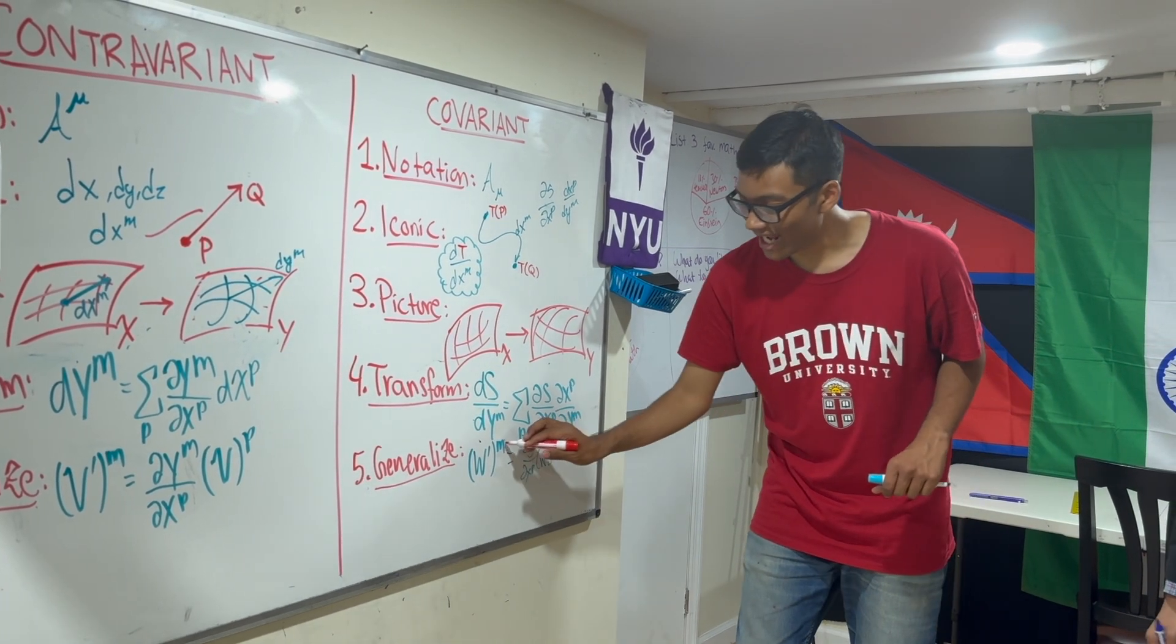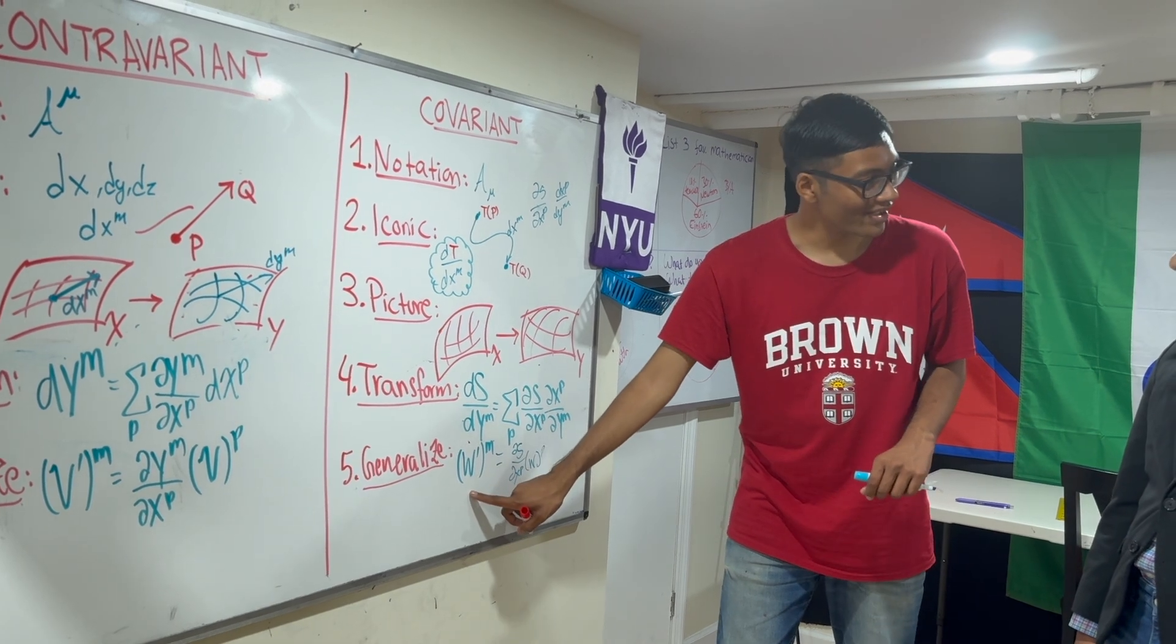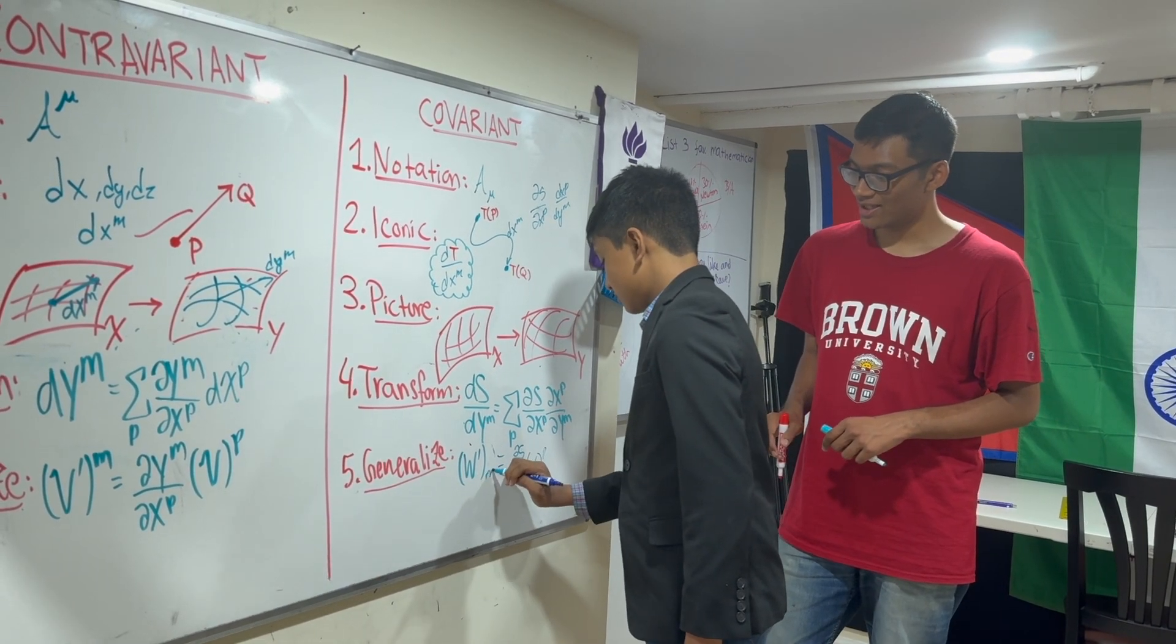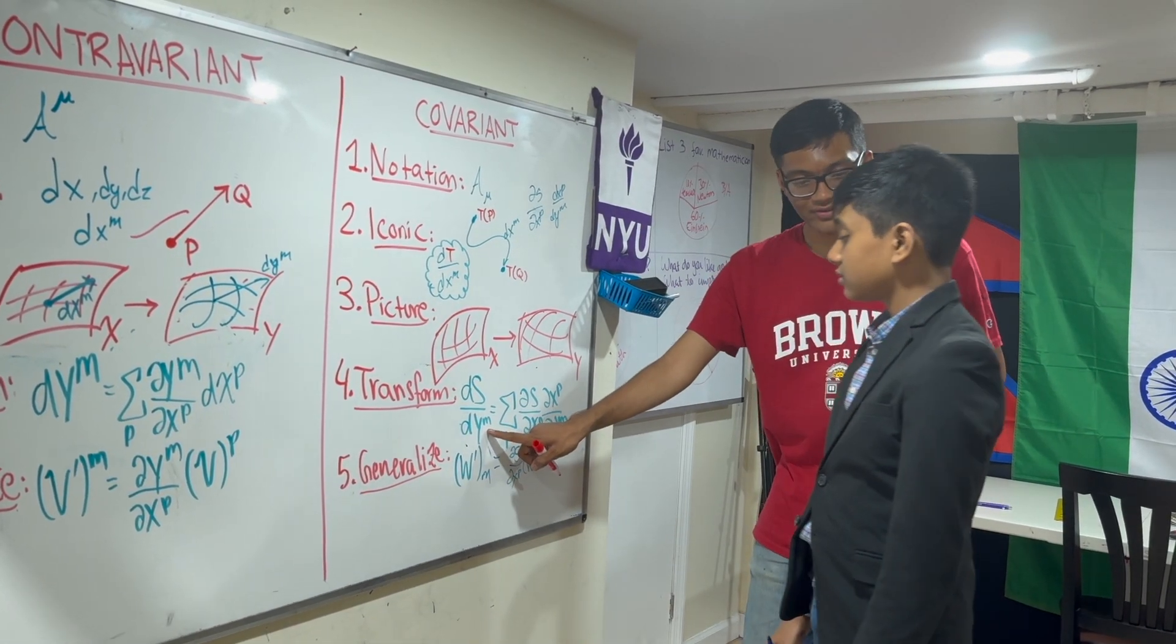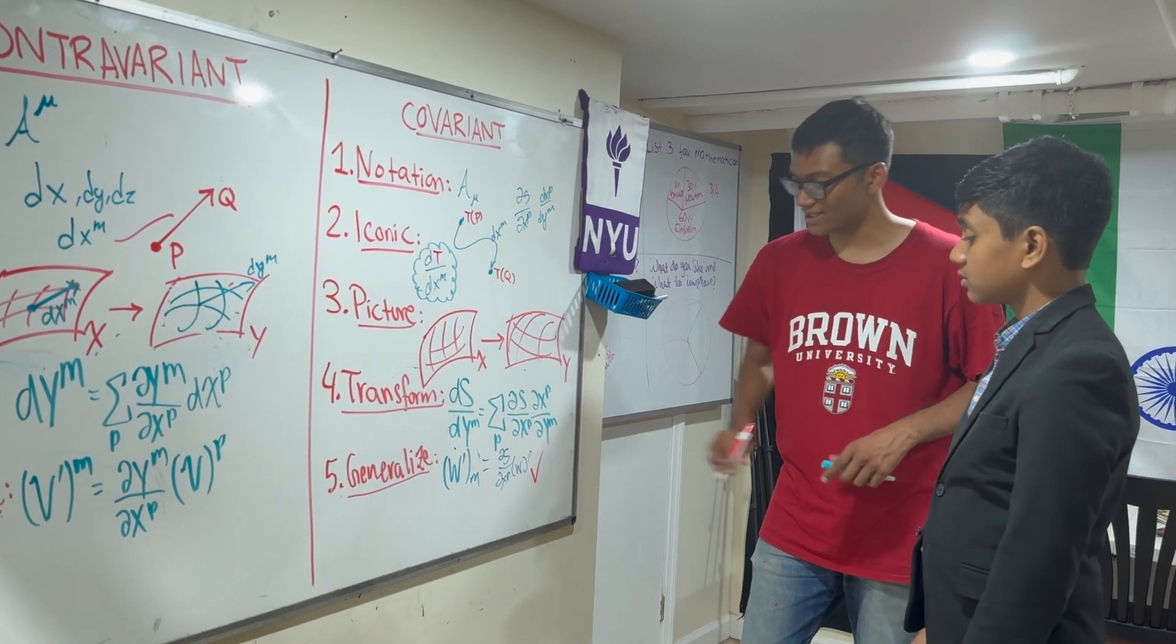We're going to generalize our covariant tensor. The components of our tensor w in the new coordinate system are... The only thing is that I made a mistake. This is a covariant vector, subscript index, because 1 over a contravariant is a covariant vector. This is exactly right.